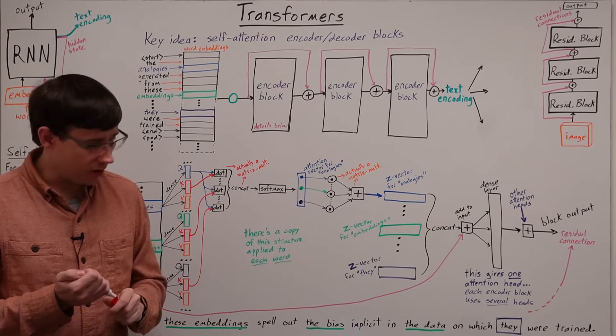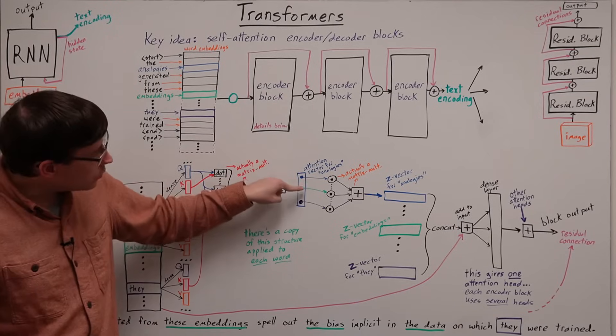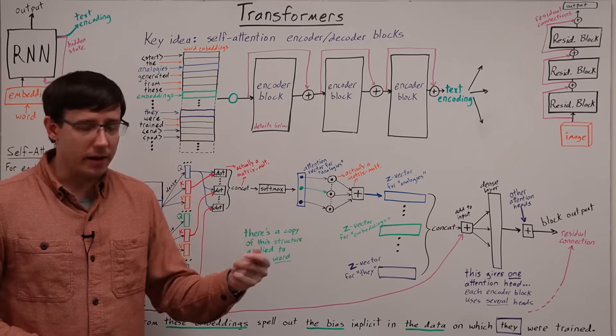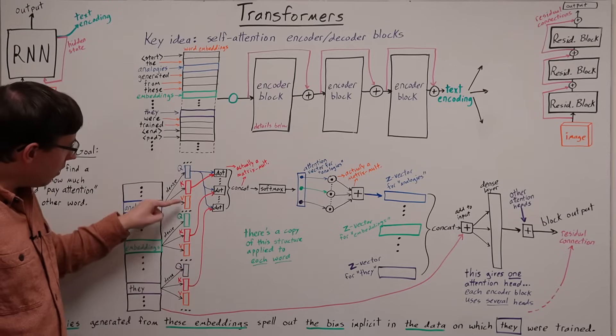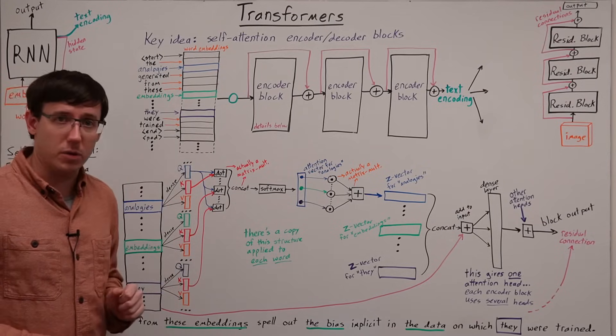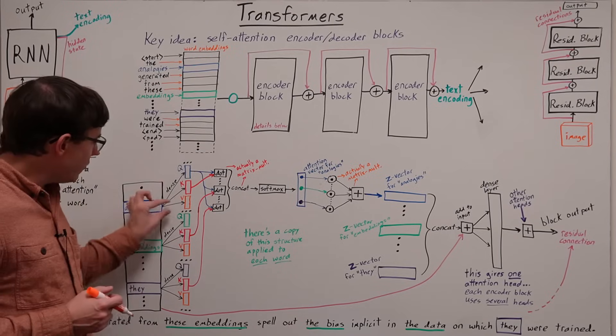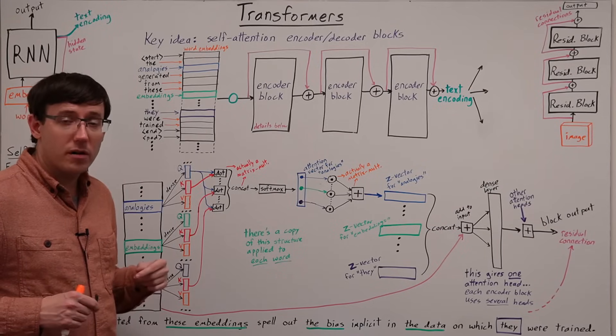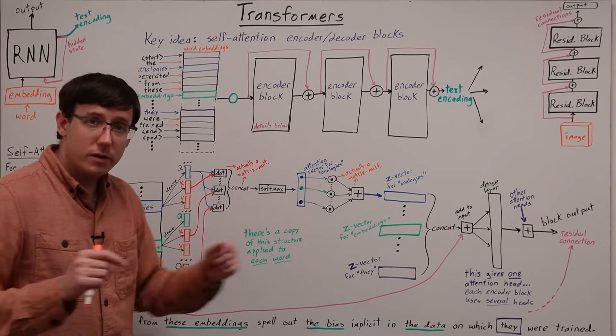And the way we actually pay attention is we'll use those softmax weights as multipliers on all of the value vectors for every word in the document.